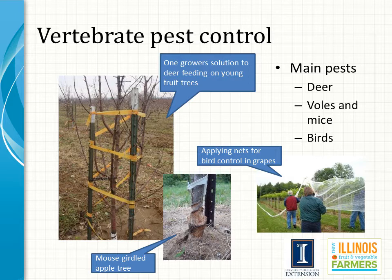Voles, deer, and birds are the three major vertebrate pests of fruit plantings. Voles are mouse-like mammals that eat the bark and roots of young fruit trees and thornless blackberries in winter, and are frequently a serious problem. Deer consume the new shoots of fruit trees. Birds damage the fruits of blueberry, cherry, gooseberry, and grape plantings.